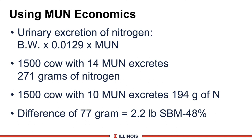Let's look at the economics of milk urea nitrogen. Using an equation developed by Wisconsin researchers, we take body weight times a constant times the MUN value. A 1,500-pound Holstein cow with a MUN of 14 would excrete about 271 grams of nitrogen. The same cow with a MUN of 10 would excrete about 194 grams — a difference of 77 grams, which translates into slightly more than 2 pounds of 48 percent soybean meal. At 10 to 12 cents per pound, that's 22 to 30 cents you can reduce in feed costs and still hopefully maintain milk production and milk protein levels.